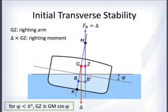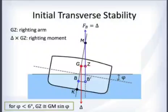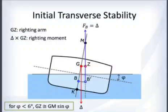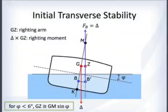The righting moment is the displacement Δ times GZ. For small angles — up to about 6 degrees — GZ is approximately equal to GM times the sine of the angle of heel φ.